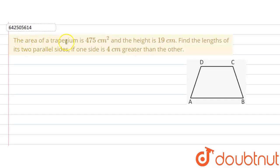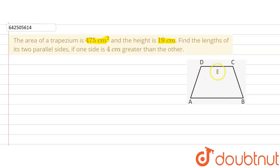The given question says that the area of a trapezium is 475 centimeter square. We are given the area of the trapezium and we are also given the height, that means the distance between the two parallel sides, because a trapezium is a figure in which two opposite sides are parallel to each other. Here AB is parallel to DC, and the height is 19 centimeter.